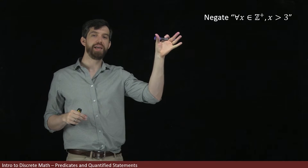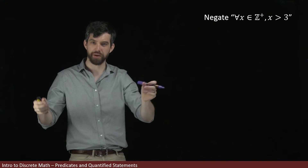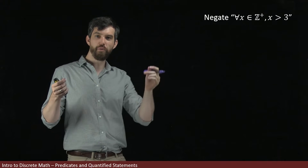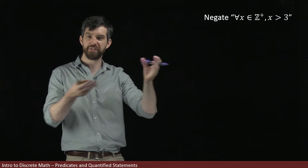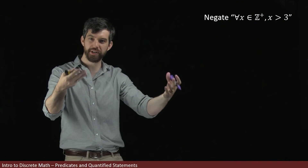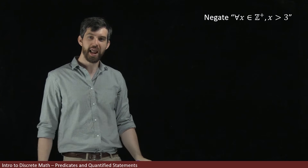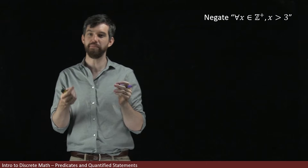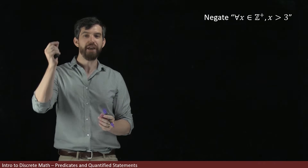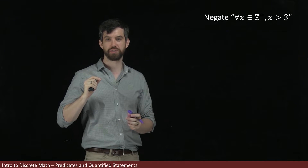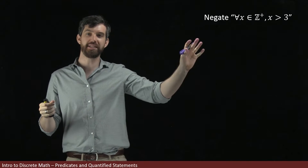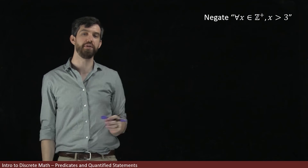Now that I know my statement is false, let's turn to the negation. If my statement is false, then my negation should be true. I'm going to write the negation down in the same basic way that I argued the original statement was false — namely, I found some x's in the positive integers, 1, 2, and 3, that had the property that they were less than 3. In other words, they were not greater than 3.